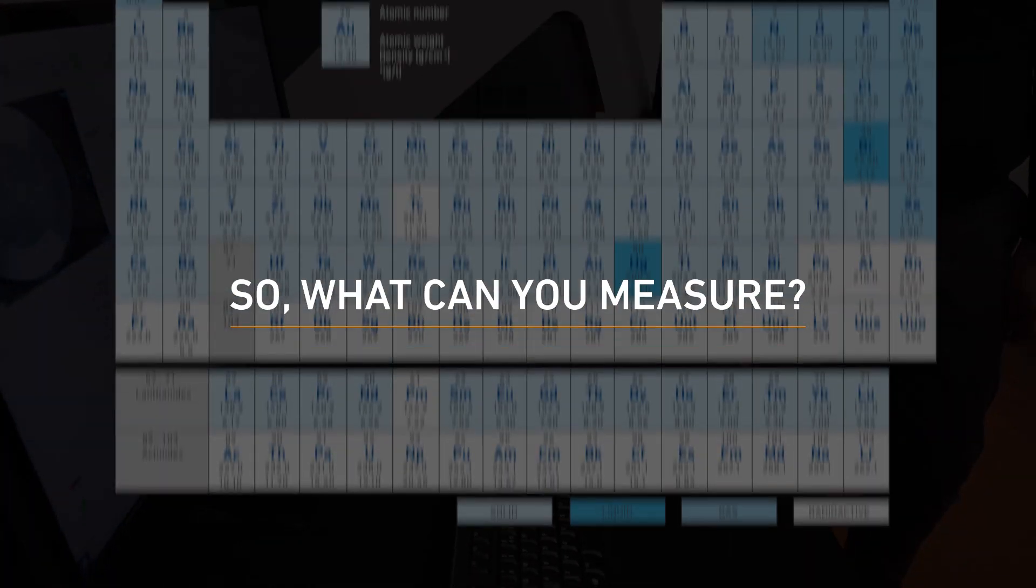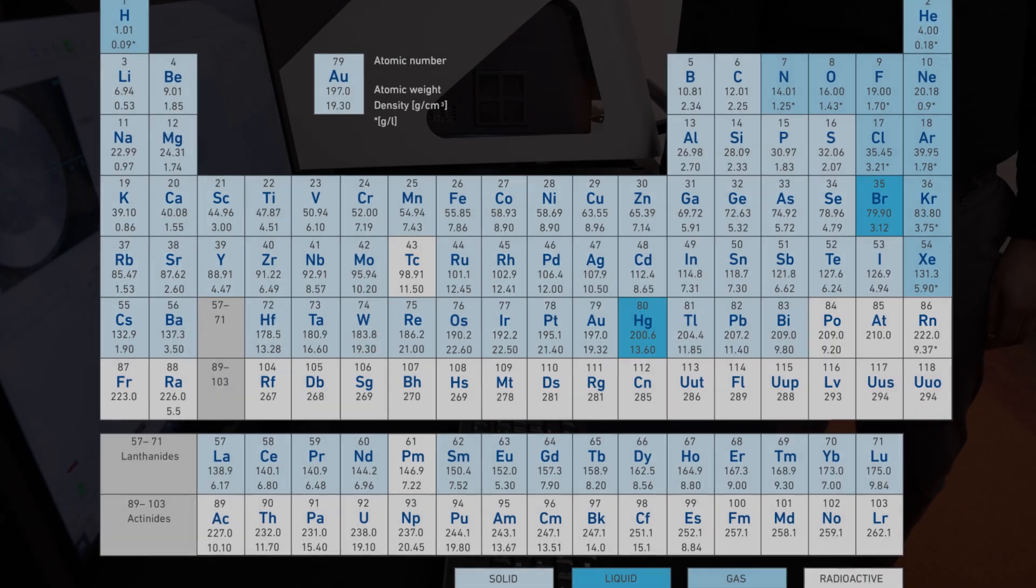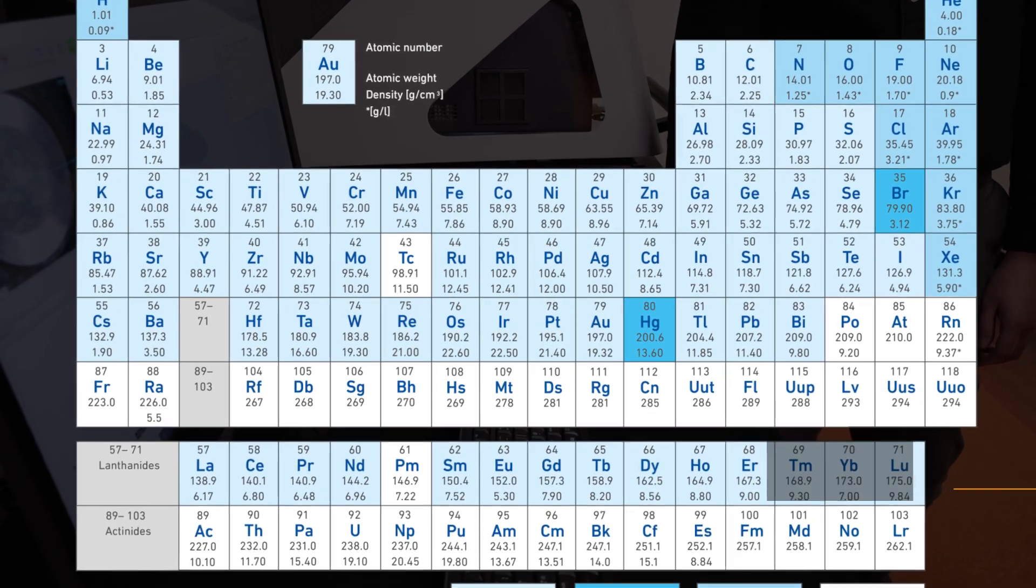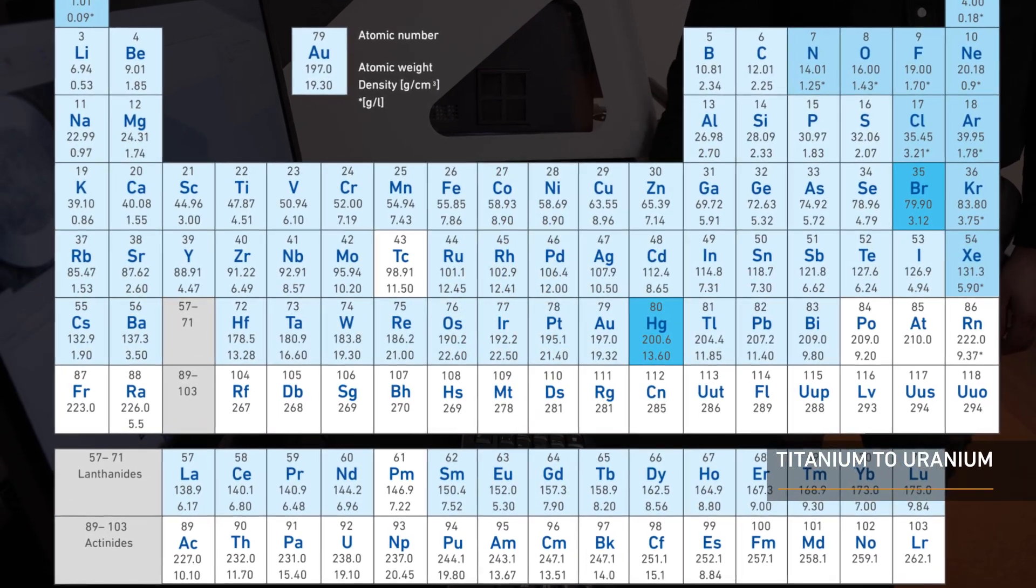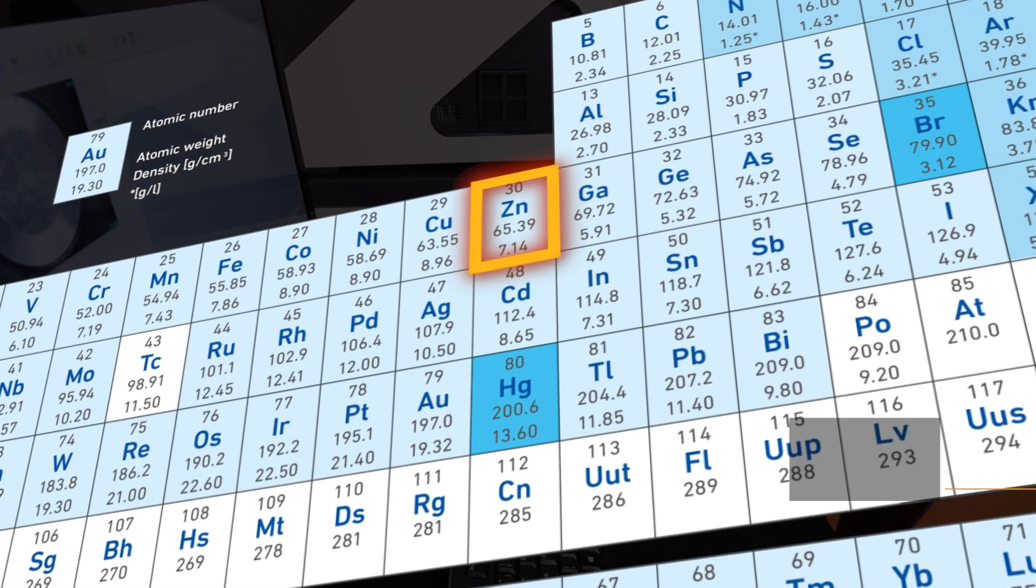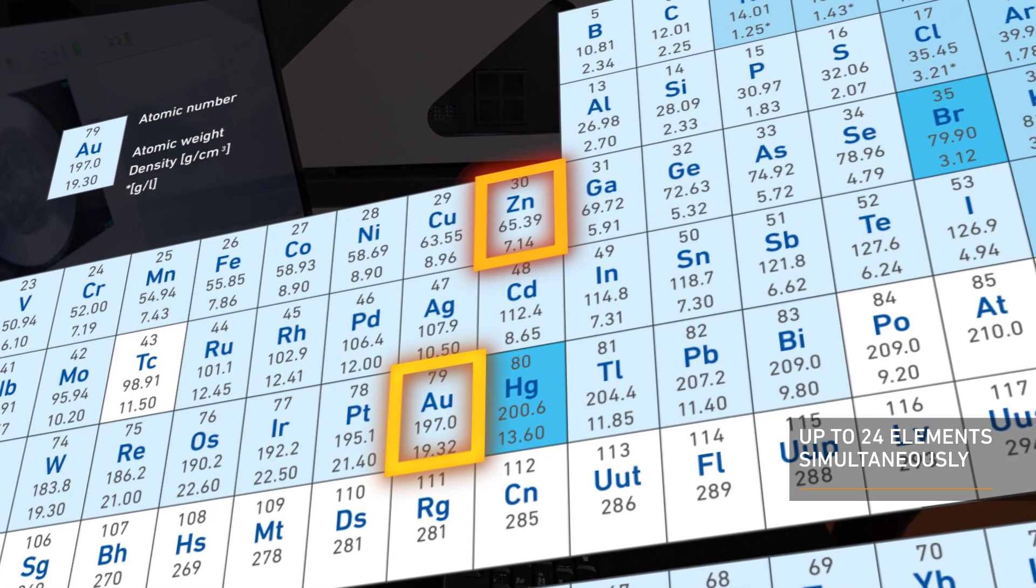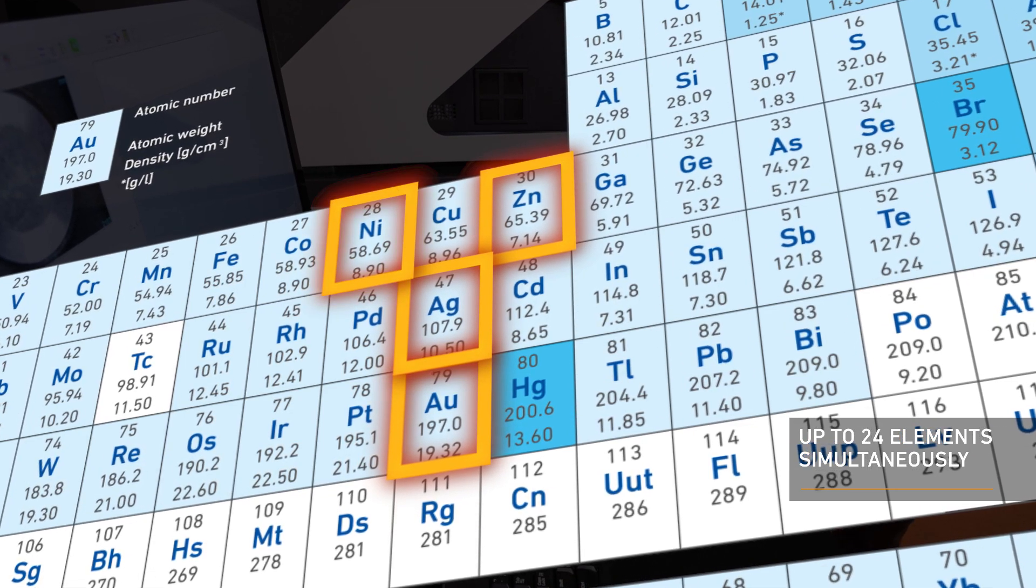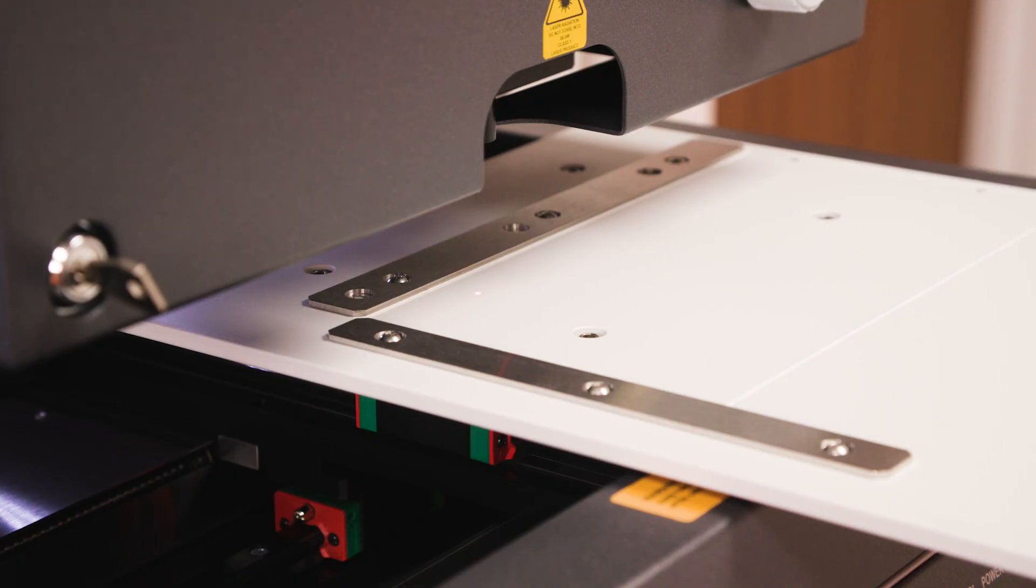So, what can you measure? You can measure a wide range of elements during your quality testing with just this one instrument, from titanium to uranium. Typical applications include zinc, zinc-nickel, gold, silver, nickel, nickel-phosphorus and others.